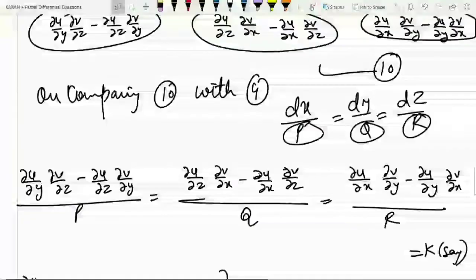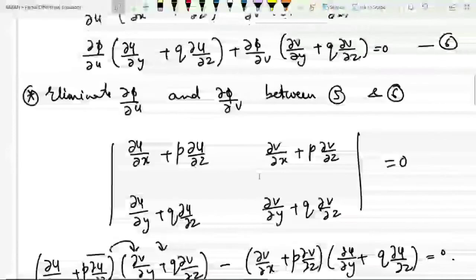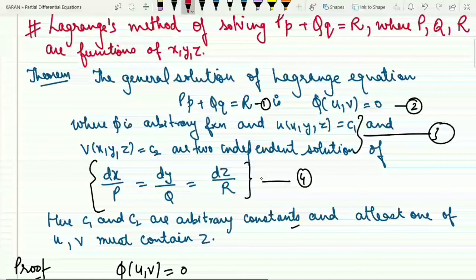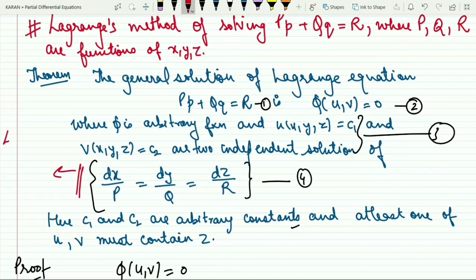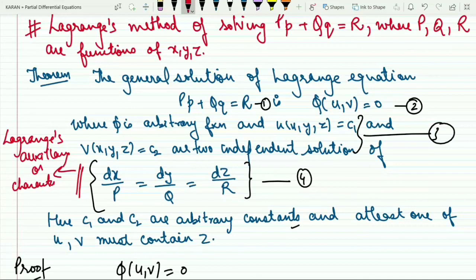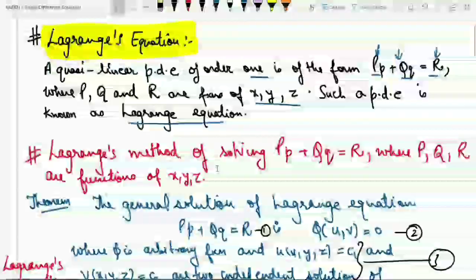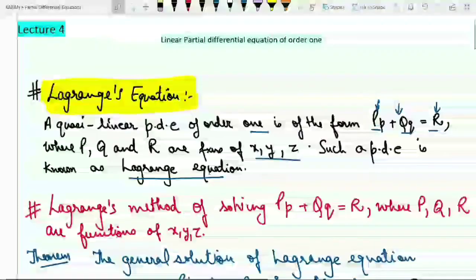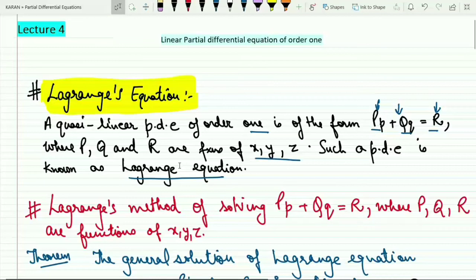Before concluding, I would like to add a remark: equation number 4 (dx/P = dy/Q = dz/R) is also known as Lagrange's auxiliary or characteristic equations. I hope you have understood this theorem. In upcoming video lectures, we will learn the working rule to solve Lagrange's method and solve questions based on it. Do subscribe to my YouTube channel and press the bell icon. Thank you.